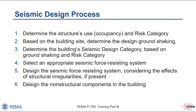You'll be seeing this slide a number of times throughout the presentation. It shows the basic steps in the seismic design process under ASCE 7: determining the building's risk category based on its use and occupancy, determining the design ground shaking level based on site location and soil conditions, determining the seismic design category, selecting an appropriate seismic force resisting system, designing that system, considering effects of any structural irregularities, and designing non-structural components in the building.